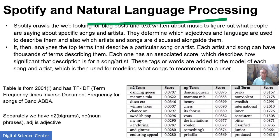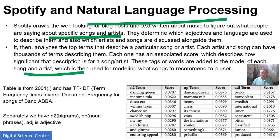Natural language processing involves crawling the web to look for text about music — what people are saying about specific songs and artists, as well as the text in the song itself. You study the type of language and adjectives, and which artists and songs are discussed alongside this song, then look at the top terms. You build a giant text model which can be used to recommend similar songs to a user.